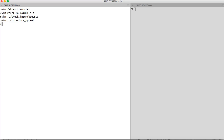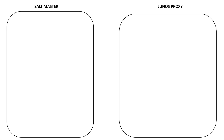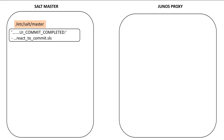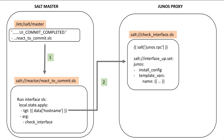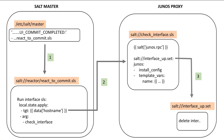This is the whole reactor system. Here is a graphical representation. On my system I have a salt master and a Junos proxy running, along with the Junos syslog engine. First, in the master configuration I map the event tag to the reactor file. When the uicommit_completed event arrives on the master bus, react_to_commit file is executed. That file triggers the check_interface SLS file on the Junos proxy. The check_interface file queries interface information and checks admin status. If an interface is down, interface_up.set is installed on the Junos device.